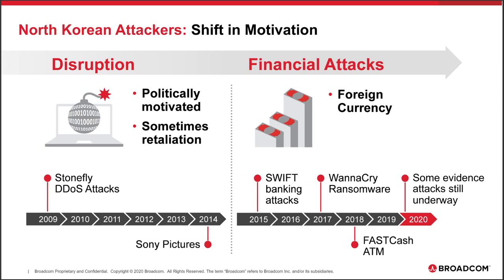FastCash contained logic that allowed it to create fraudulent ISO 8583 messages — the international standard for financial transaction messages. It read all incoming network traffic, monitoring for incoming ISO 8583 request messages, and if it found any containing an account number used by the attackers, the Trojan would transmit a fake response message approving a withdrawal request. The upshot was that it allowed the attackers to essentially empty any ATMs they targeted of cash.